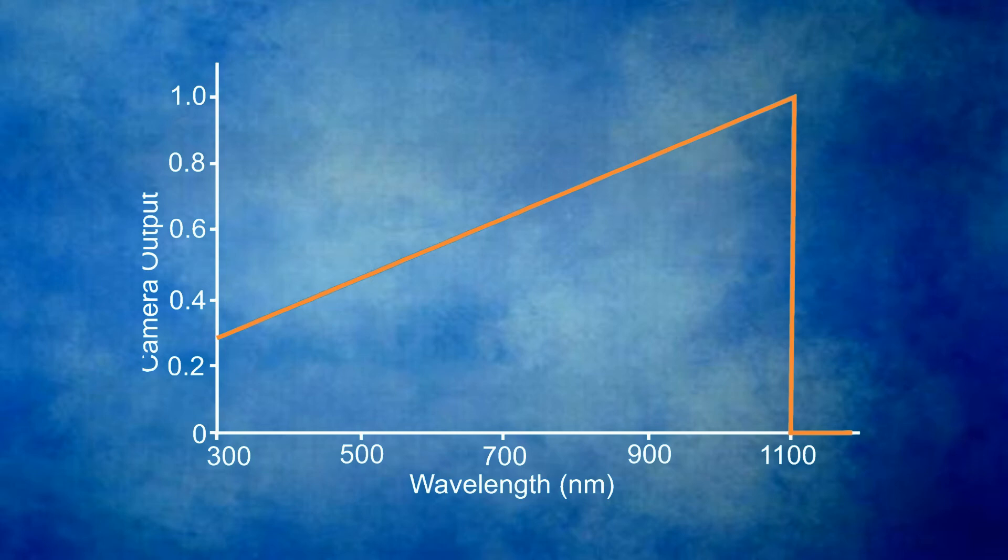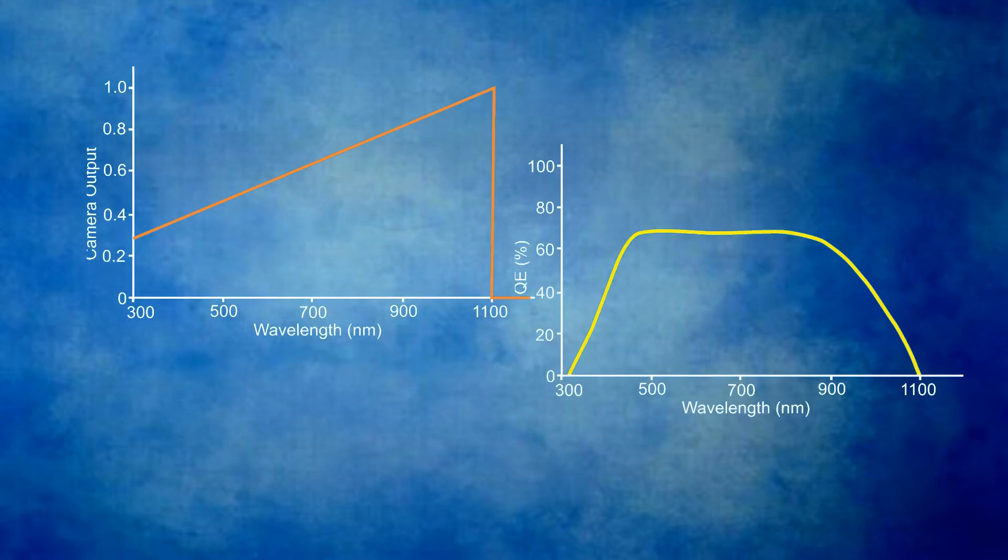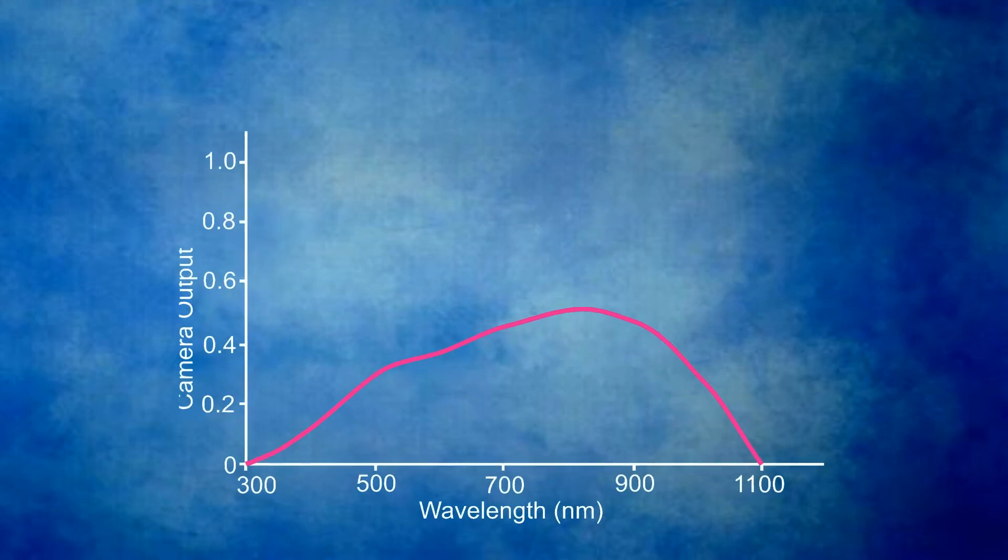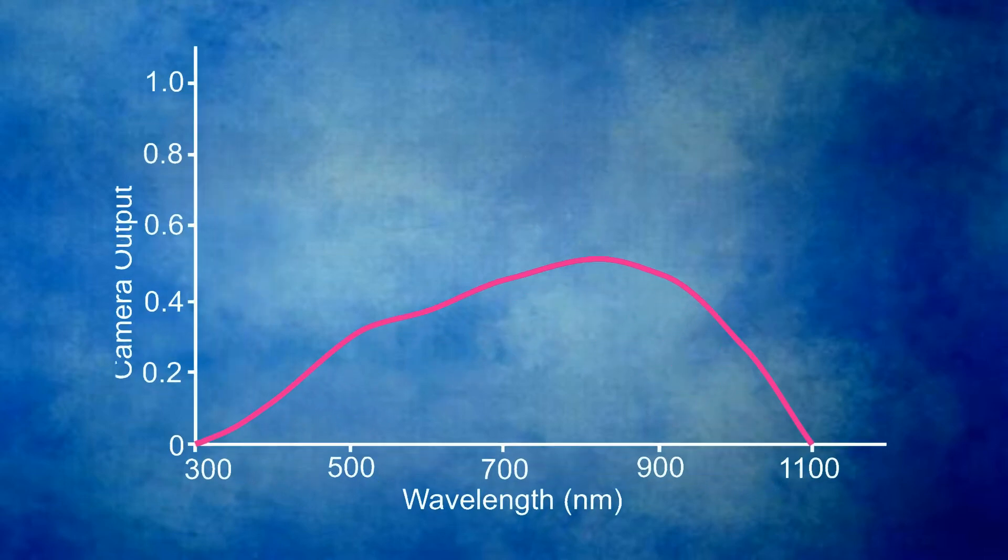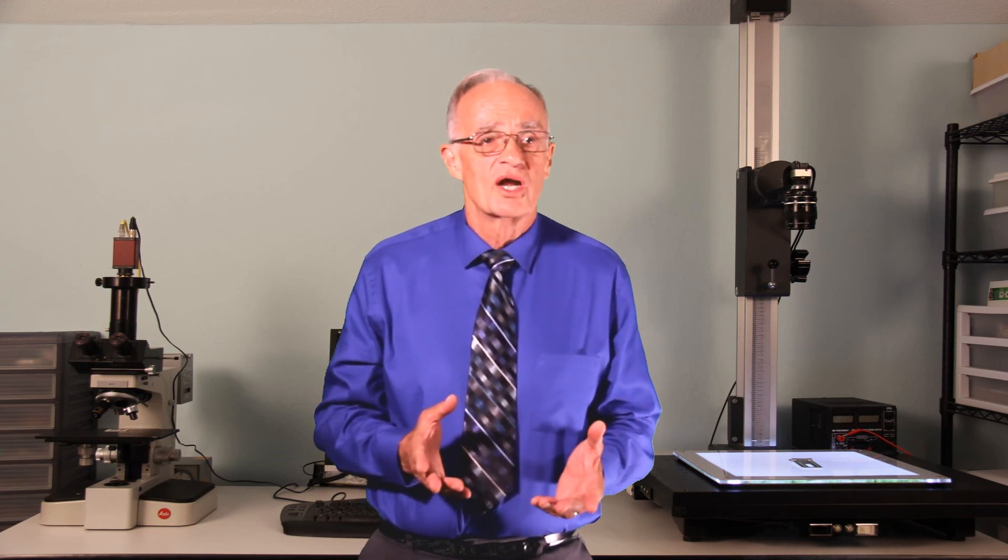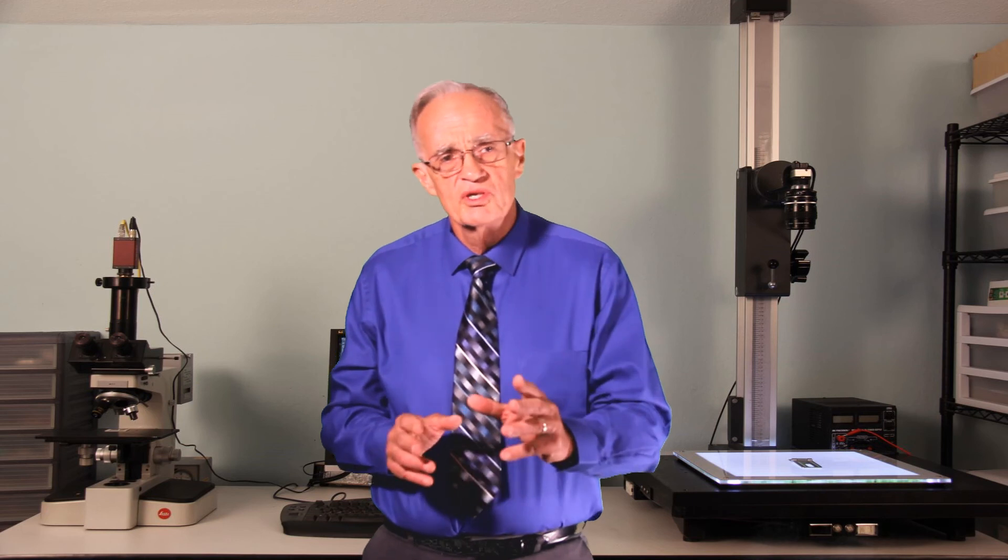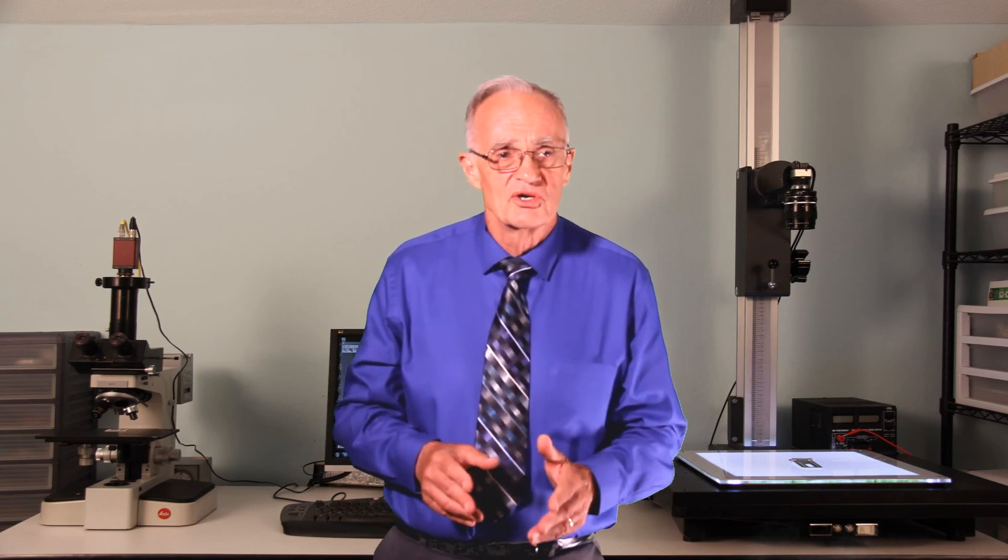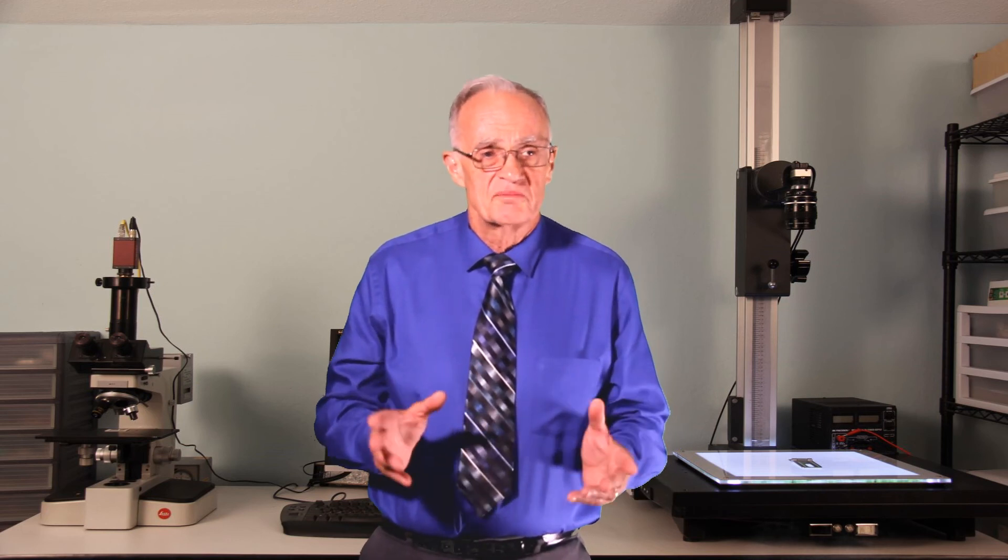To find out how the camera will really perform, we take the ideal response and multiply that by the camera's quantum efficiency. This gives us the camera's spectral responsivity, that is, what the camera's output will be for a fixed amount of energy as a function of wavelength. The takeaway is that while most camera specifications give you the quantum efficiency, what you really want to know as a camera user is the camera's spectral responsivity.